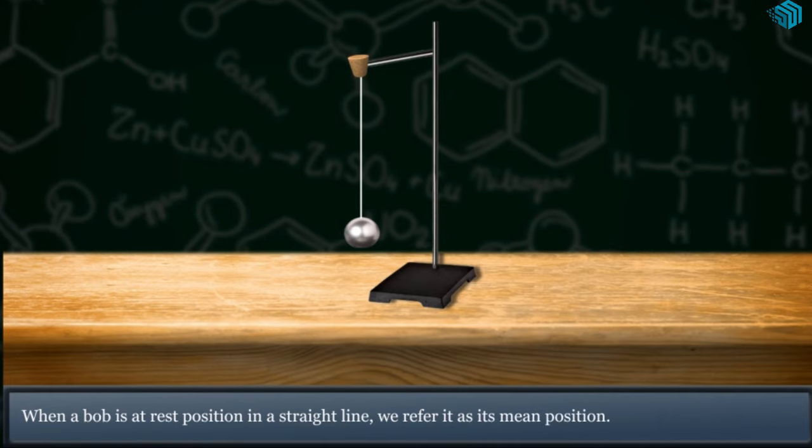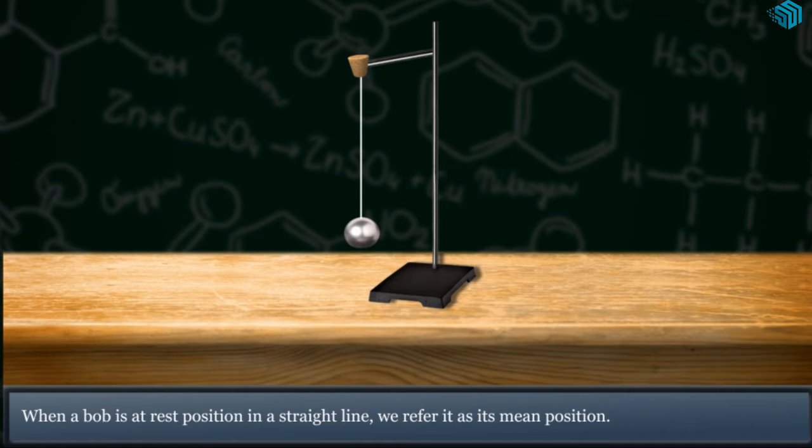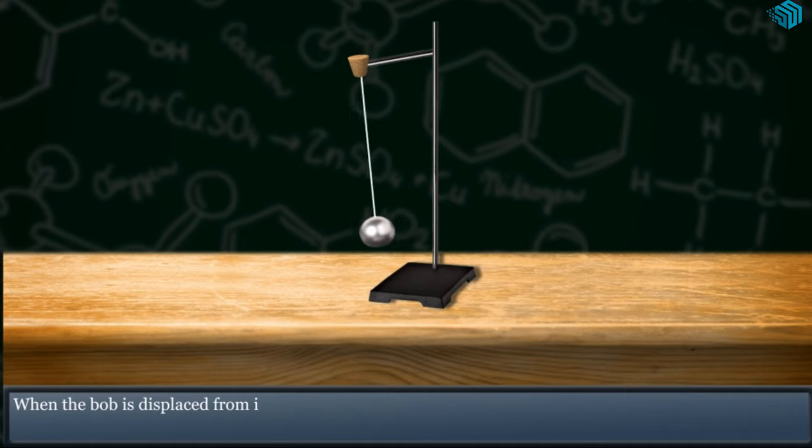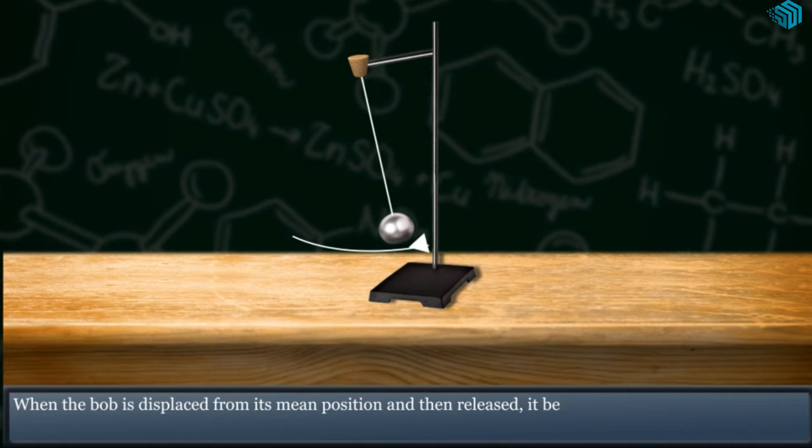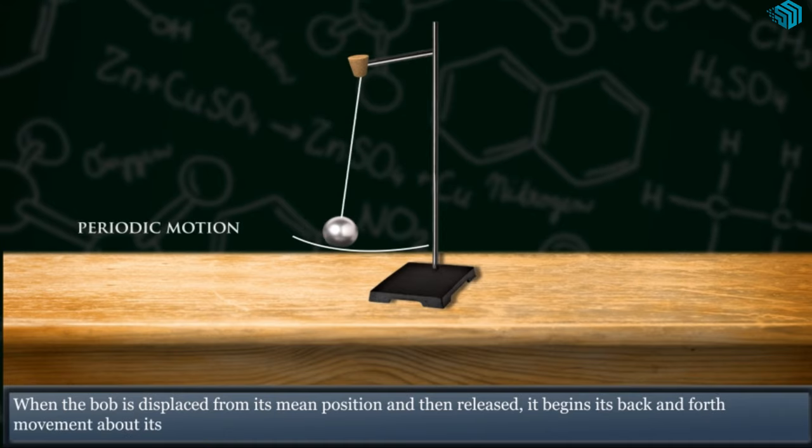When the bob is displaced from its mean position and then released, it makes to and fro movement about its mean position.